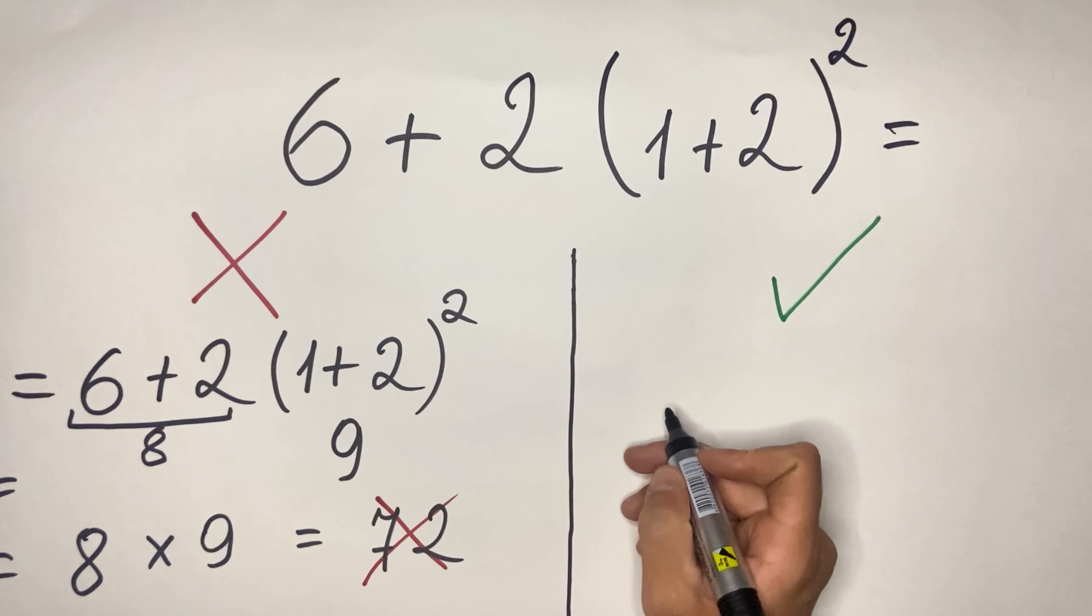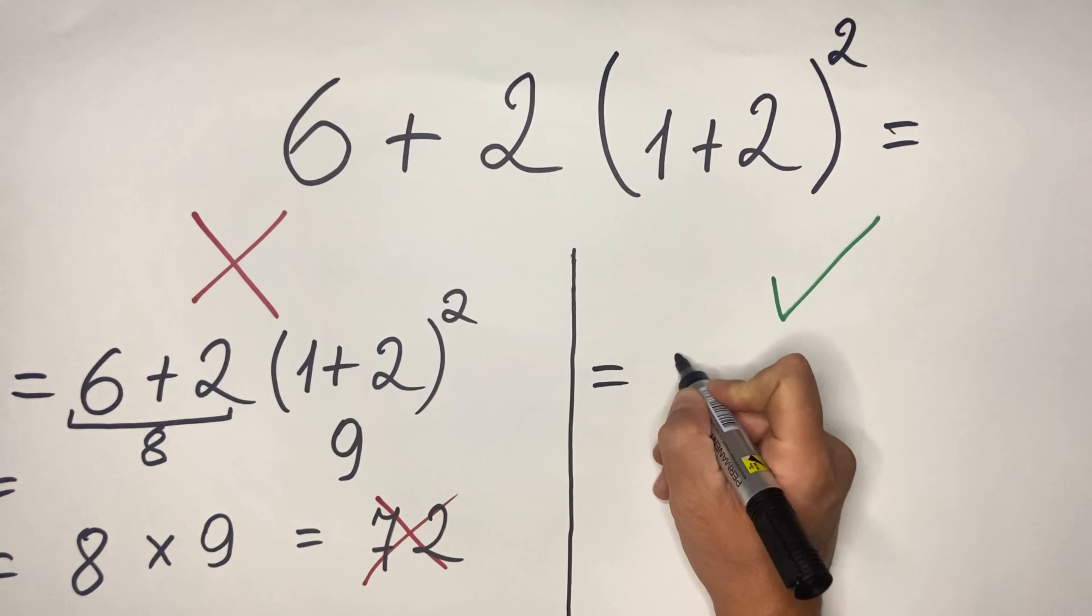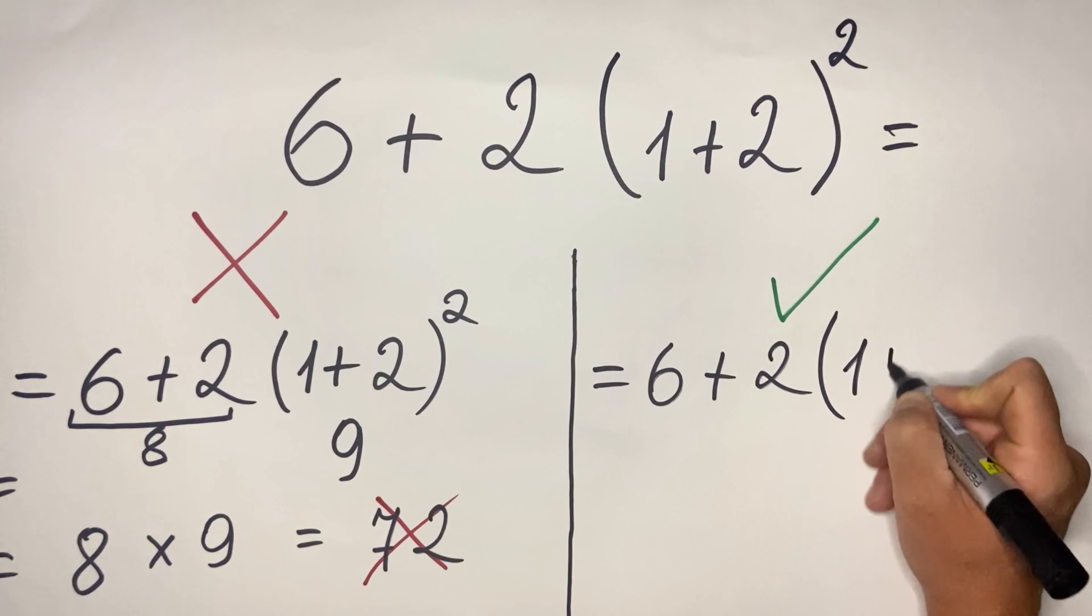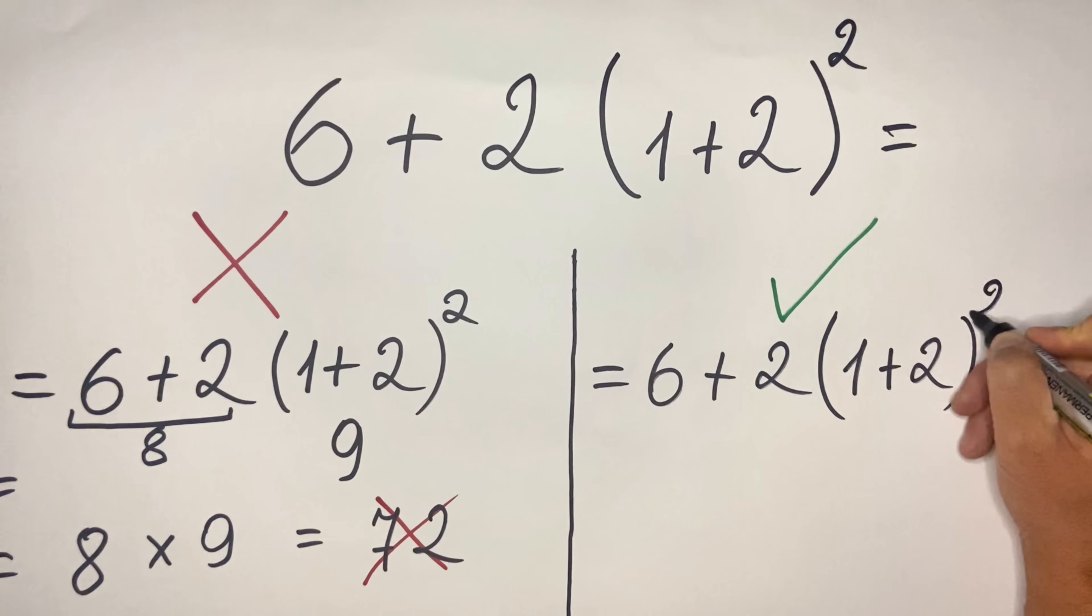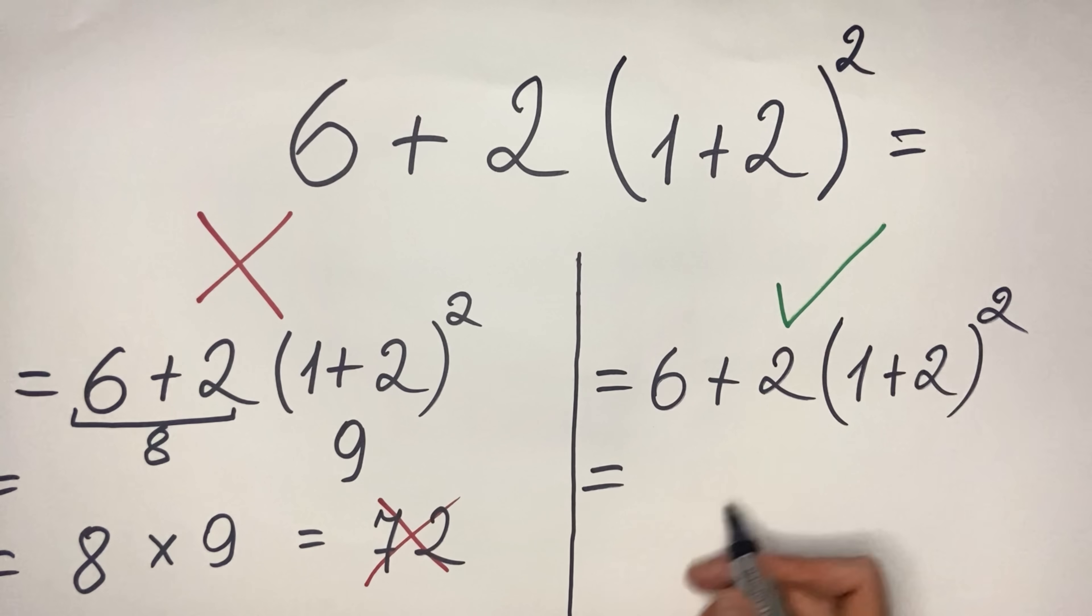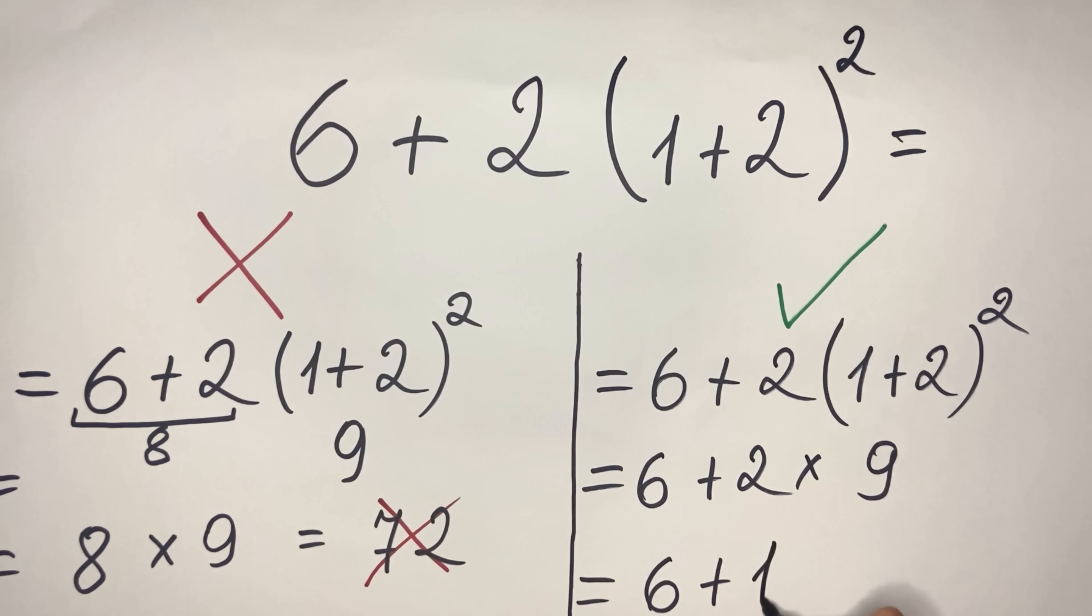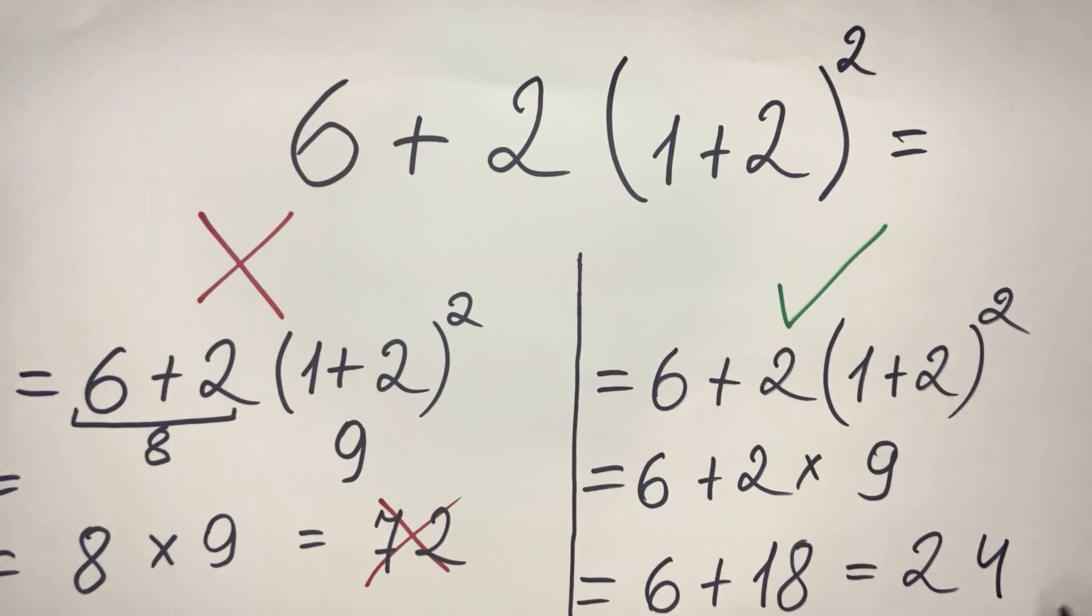We have 6 + 2(1+2)². We know that it's 9, so we have 6 + 2 multiplied by 9, because 1 + 2 as we saw here is 3 squared, then we have 9. And then we have 6 + 18, and the result will be 24.